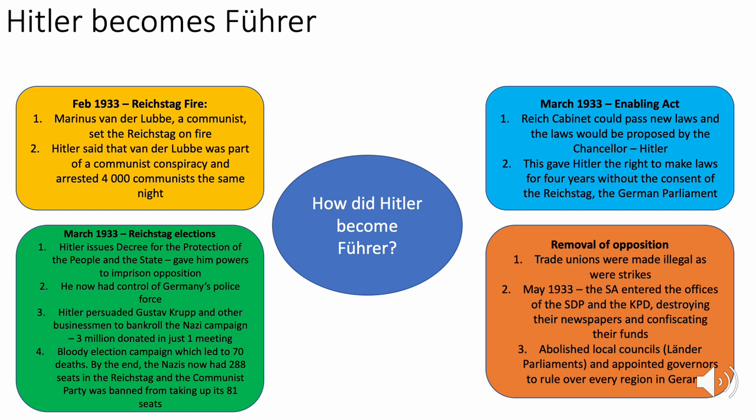Hitler then removed all opposition. Trade unions were made illegal in May 1933. Stormtroopers entered the offices of the SPD and KPD, destroying their newspapers and confiscating their funds. Local regional councils — the Länder parliaments — were abolished, and Hitler appointed governors to rule over every region in Germany.